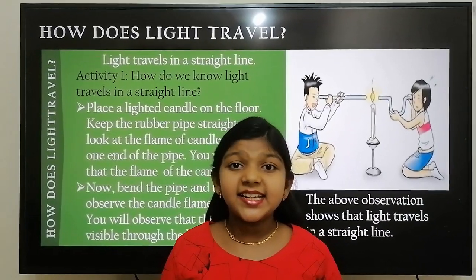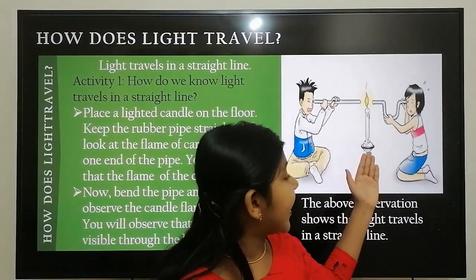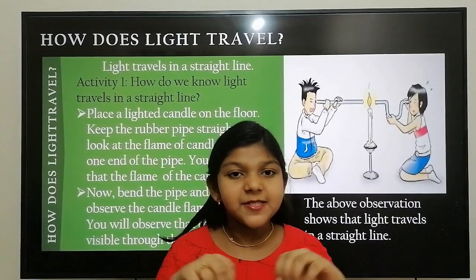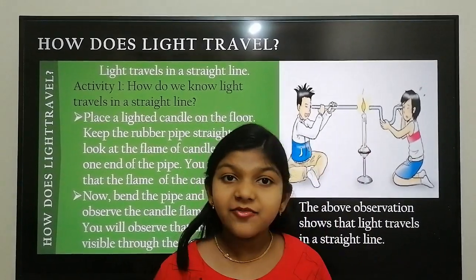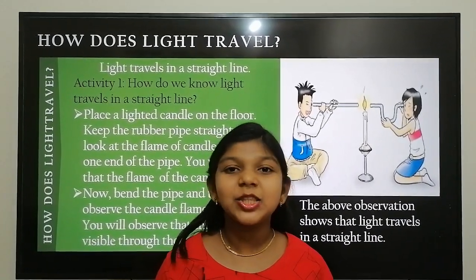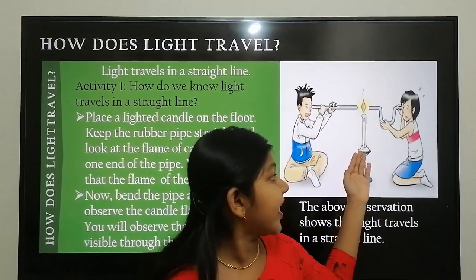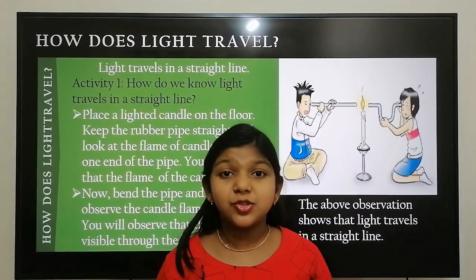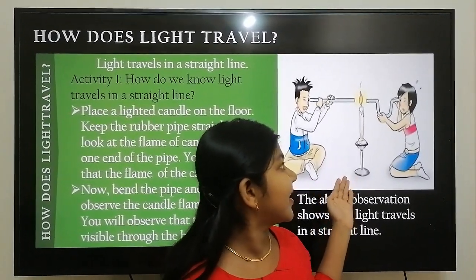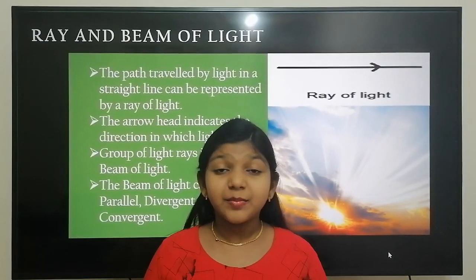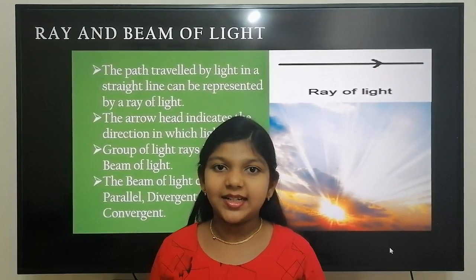Now let's investigate the rectilinear propagation of light through an activity. Place a lighted candle on the floor. Now take a rubber pipe, hold it straight, and try to see the candle flame through one end of the pipe. Is the flame visible? Yes, the flame will be visible through the straight pipe. Now bend the pipe and try to observe the flame of the candle. The flame of the candle is not visible through the bent pipe. This observation shows that light travels in a straight line. It is proven that light does not reach if it does not get a straight line path.